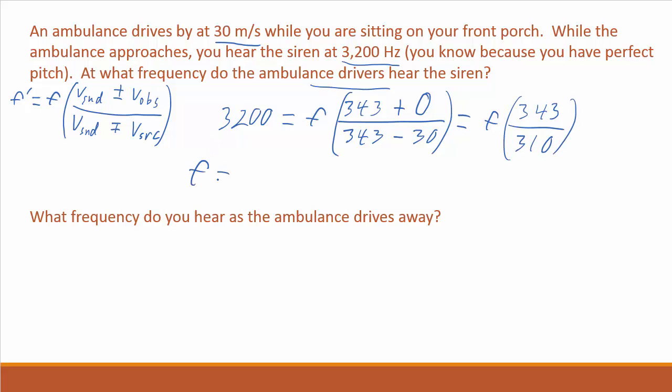and we get frequency times 343 over 343 minus 30 is 310. So we're going to get our frequency equals 3200, and then multiply that and divide that, so the fraction flips over. And before we even calculate this, we would expect that you're hearing a higher frequency than what the ambulance drivers are hearing, so we would expect something lower than 3200, and we're multiplying by something less than 1, so obviously that's going to work out. This turns out to be 2920 hertz, if we round it a little bit.